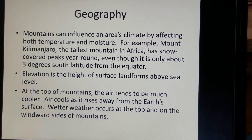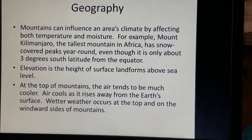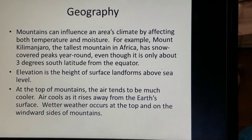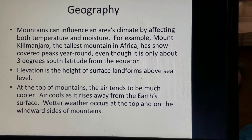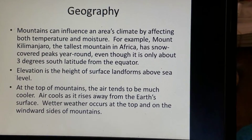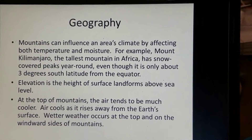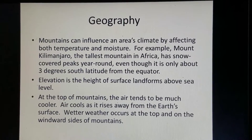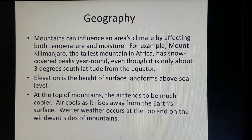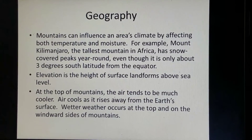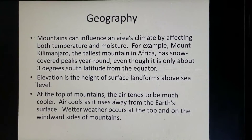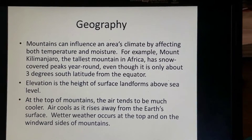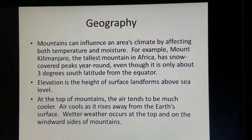Looking at geography, mountainous terrain can influence an area's climate by affecting both temperature and moisture. For example, Mount Kilimanjaro — the tallest mountain in Africa — has snow-covered peaks year-round, even though it is only about three degrees south latitude from the equator. You would think that by latitude, Mount Kilimanjaro should receive more direct sunlight, but its elevation and height basically counter that latitude and result in a very cold climate.